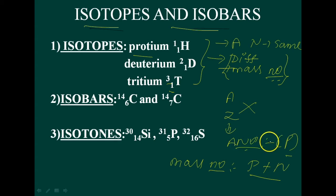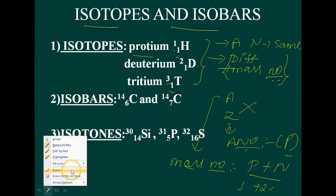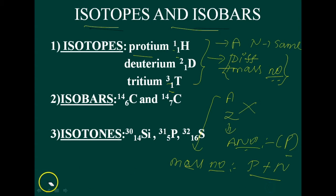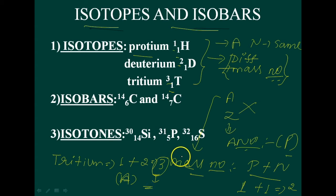So the atomic number is Z, and the mass number A equals protons plus neutrons. For protium, there is only one proton. For deuterium, there is one proton plus one neutron, giving mass number 2. For tritium, one proton and two neutrons give mass number 3.